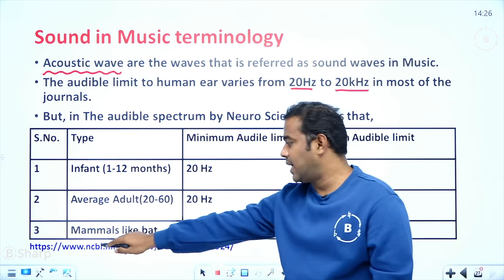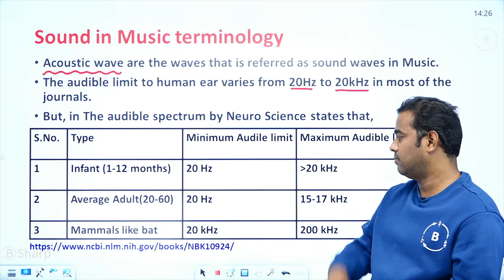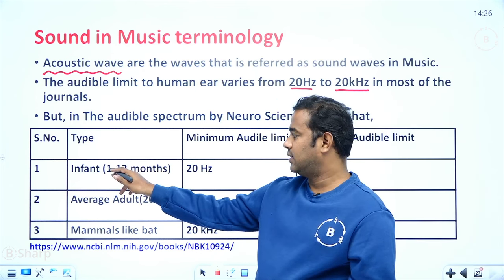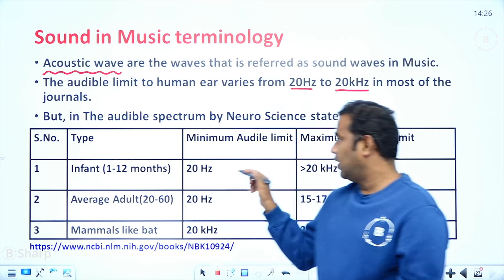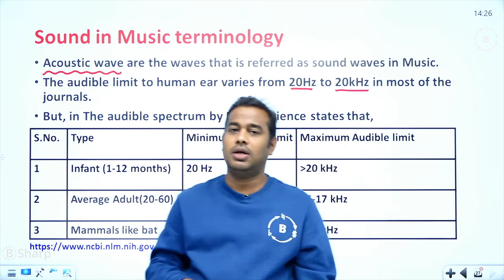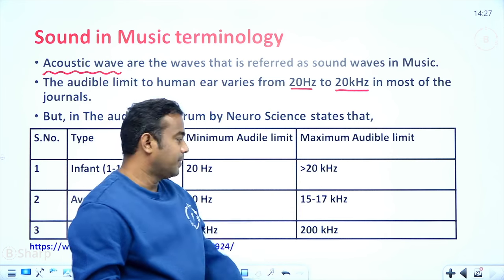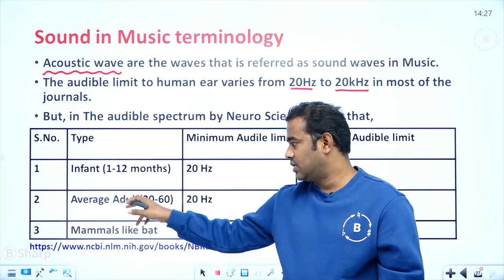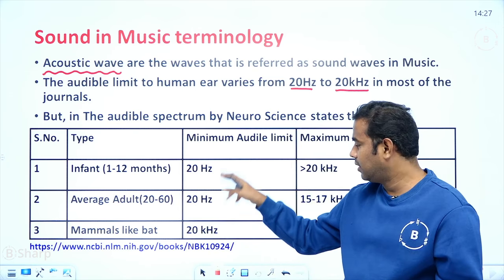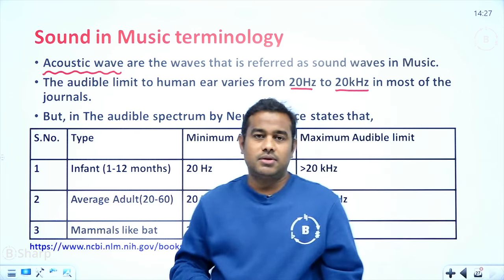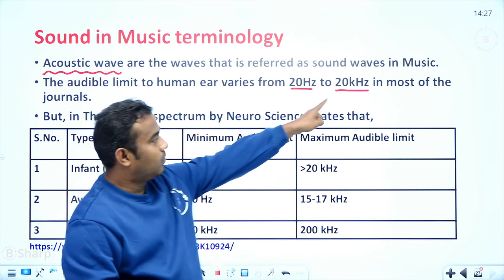However, one journal found different values. When a human is an infant — from one month to 12 months — the minimum audibility limit is 20 hertz and the maximum can exceed 20 kilohertz. As a person ages, the average adult's minimum stays at 20 hertz but the maximum drops to about 15 to 17 kilohertz, not exactly 20 kilohertz as stated in most textbooks.